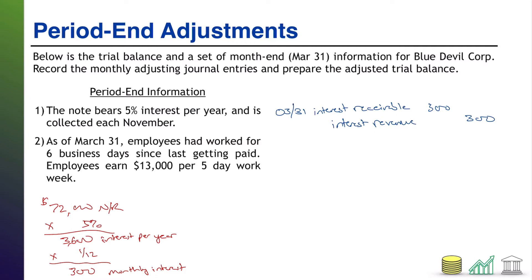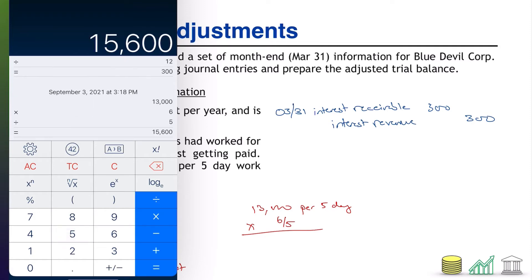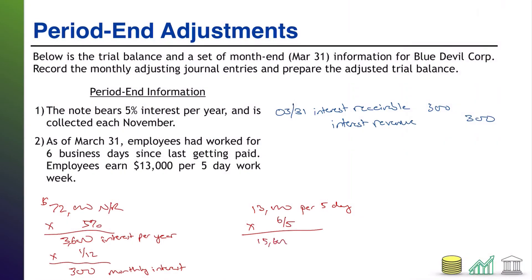Now let's look at number two. Number two says as of March 31st, the last day of the period, employees had worked for six business days since last getting paid, and employees earned $13,000 per five day work week. So we know they get paid $13,000 per five day work week, and as of the end of the period they have worked for six days since last getting paid — so times six out of five, because that's how much of the five day work week they've worked so far. $13,000 times six out of five comes out to $15,600. This is what the employees have earned over those six days.